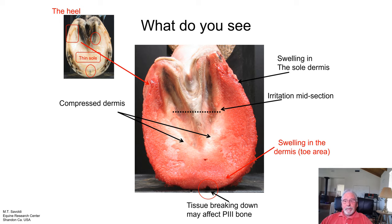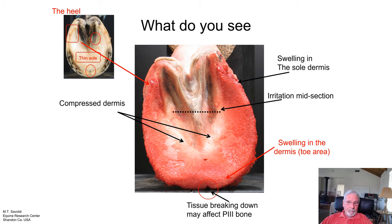Remember that the deeper the commissures, the more positive angle there will be to the P3 bone, and the more the load will develop forward onto your sole dermis. Positive P3 angles can have very negative effects on bone and on soft tissue.